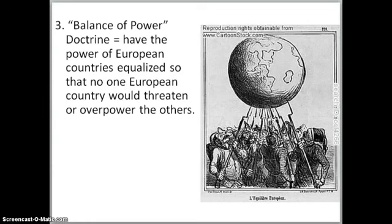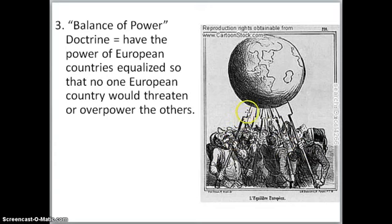The third legacy is called the balance of power doctrine — a doctrine that had the power of the European countries equalized or balanced so that no one single European country would threaten or overpower the others. In this political cartoon, a bunch of people representing countries throughout Europe are each given one gun with a bayonet, and each one is touching a model of the world, showing that each person has equal balance and equal power on the continent of Europe.